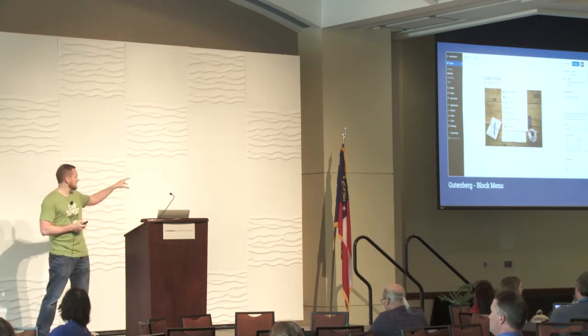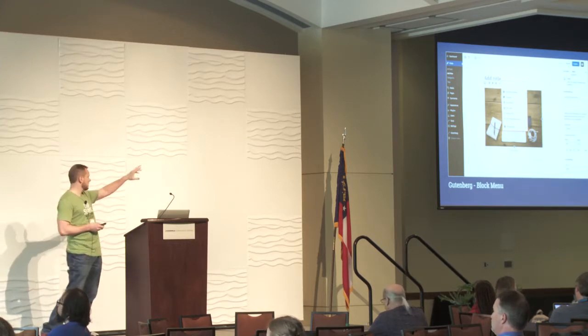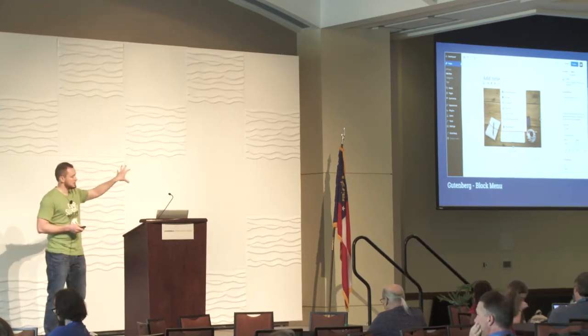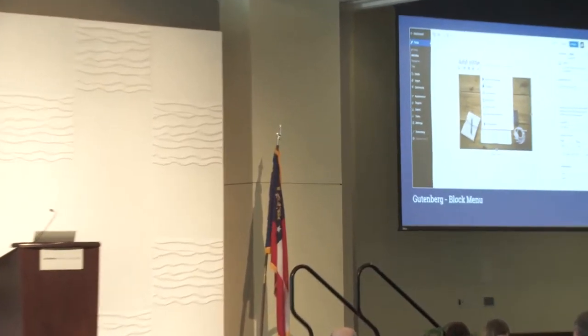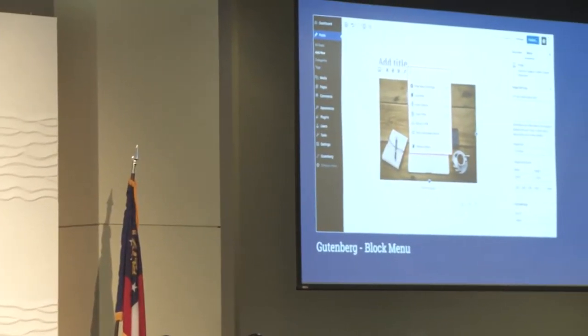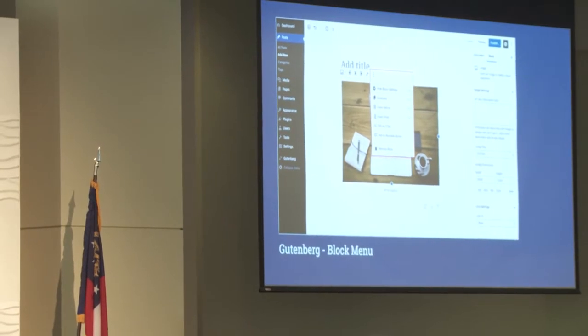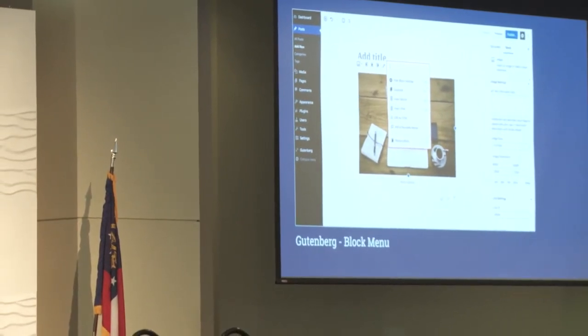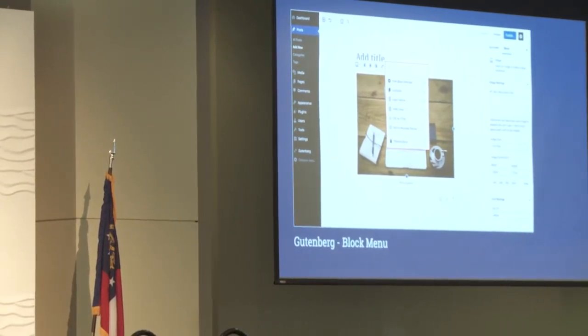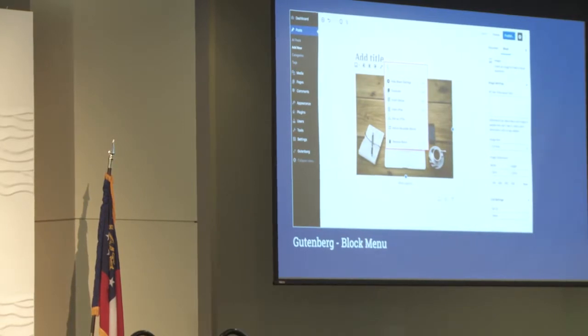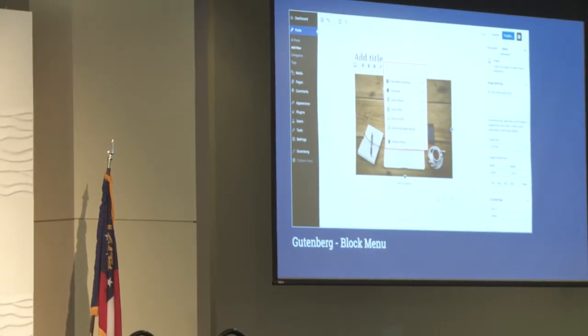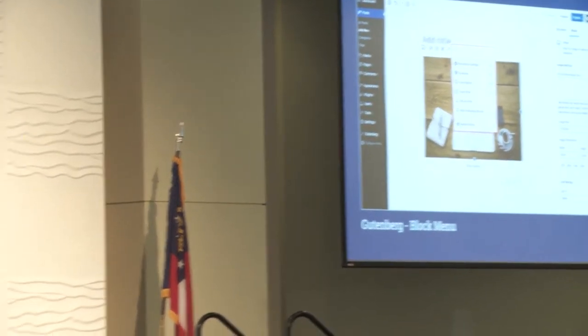The three dots is always our menu. We had the global menu earlier — this is the block menu. Each block has one. So if you're trying to add something before or after a particular block you can use this menu. If you want to edit a specific block as HTML you can do that, though certain blocks aren't really meant to be edited that way — the image block is probably one of those. You can also remove a block easily that way.